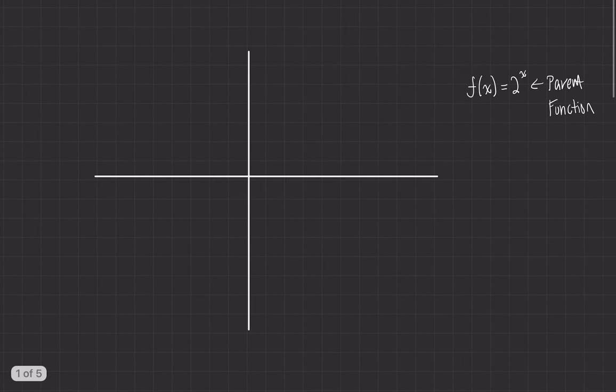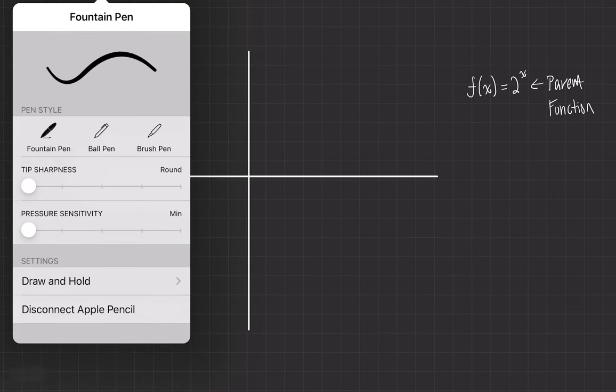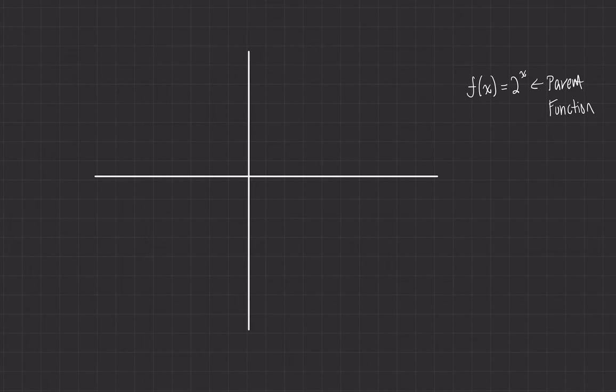So if we have the parent function 2 to the x, what does that mean? Well, we're going to plug in a couple of things here. Plug in 0, we get 1, right? 2 to the 0 is 1. Plug in 1, we get 2. 2, we get 4. And so on and so forth. 3, we get 8. Make sure you're comfortable that 2 to the 0 is 1. If you're not, let me know. I've got lots of resources for that. But suffice to say any positive number to the 0 power is 1. As we go to the right here, you can see this doubling happening. That's the curvature of exponential growth.